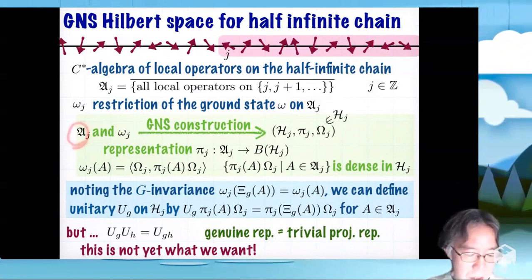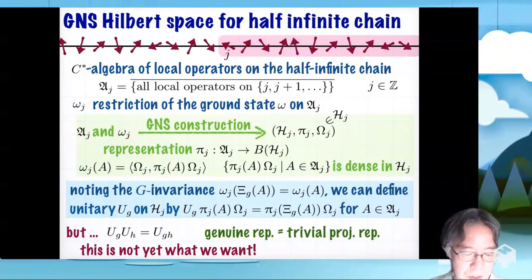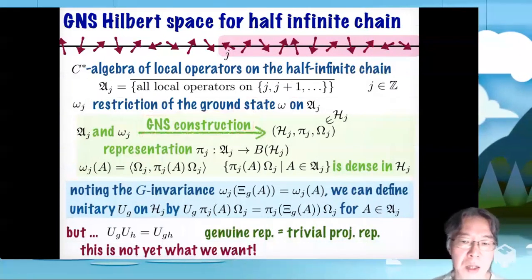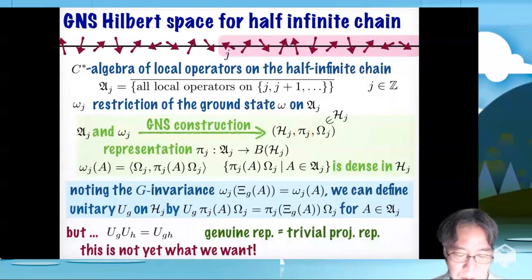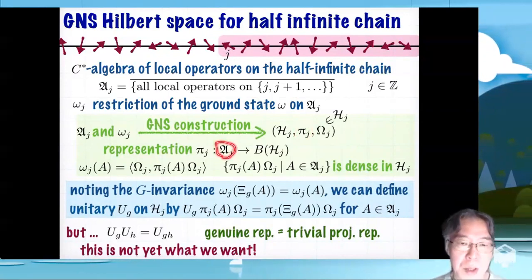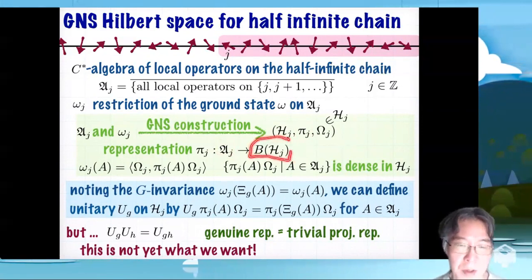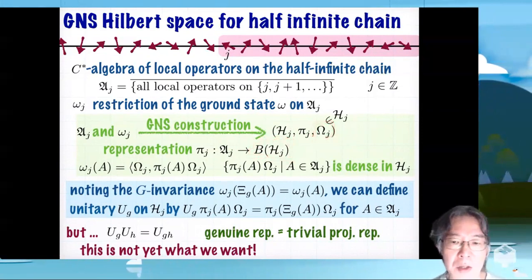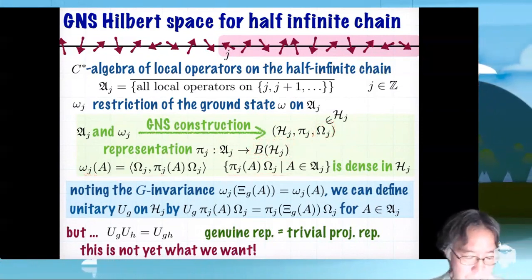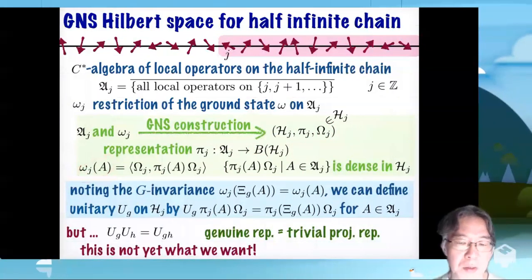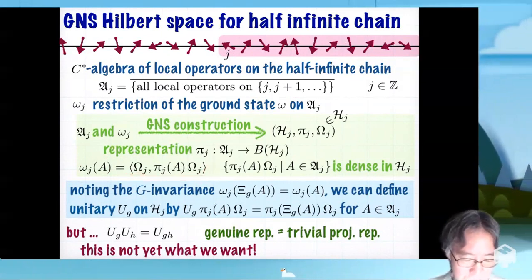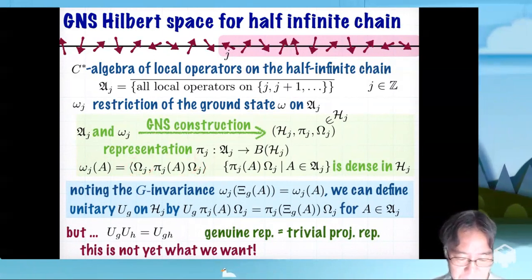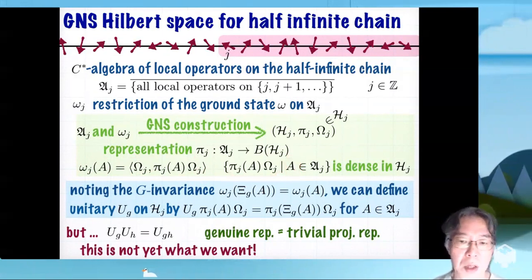Given a C* algebra ℛⱼ and a state ωⱼ on it, we can go through a very standard procedure called GNS construction to construct a Hilbert space ℋⱼ, a representation πⱼ of the C* algebra on ℋⱼ. That means πⱼ is a linear map from πⱼ to B(ℋⱼ), the set of all bounded operators on ℋⱼ, and a vector ωⱼ in this Hilbert space ℋⱼ with the following two properties. This ωⱼ(A) is the expectation value in the ground state, but it can be represented as the vector state like this. Also we see that the vector of this form where A runs over the whole system algebra is dense in the whole Hilbert space ℋⱼ.